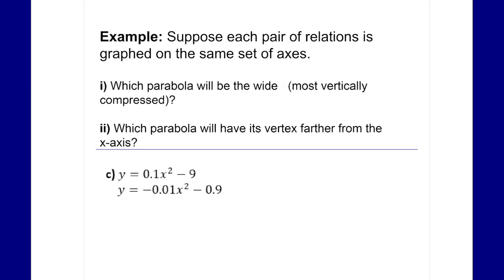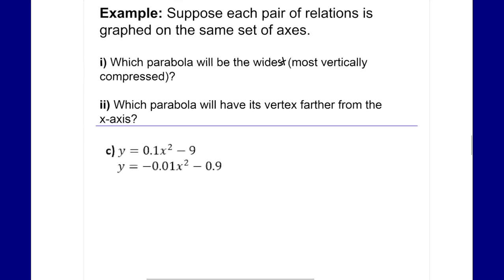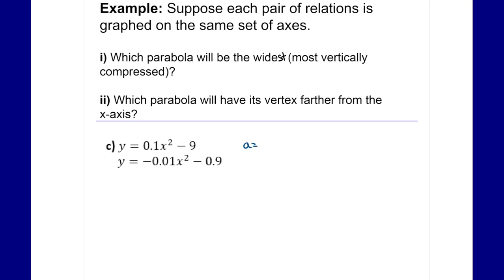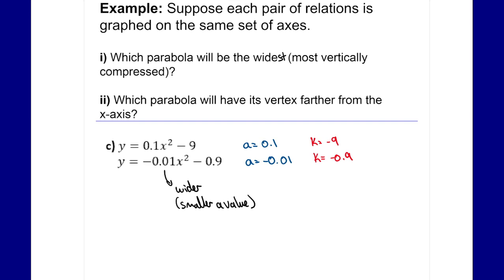For part c, looking for the widest: the a values are 0.1 and negative 0.01, and the k values are negative nine and negative 0.9. The smaller the a value, the wider the parabola, so the second one is wider because 0.01 is smaller than 0.1. However, in terms of which vertex is farther away from the x-axis, that's the first one, because it is down nine — and 0.9 is a smaller distance.